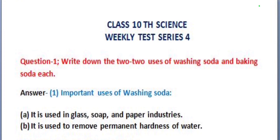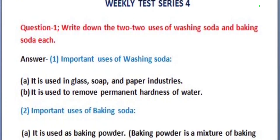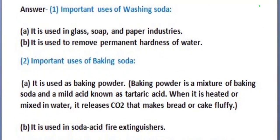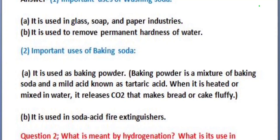It is used to remove permanent hardness of water. Next are important uses of baking soda. It is used as baking powder. Baking powder is a mixture of baking soda and a mild acid known as tartaric acid. When it is heated or mixed in water, it releases carbon dioxide that makes bread or cake fluffy. It is also used in soda acid fire extinguishers.